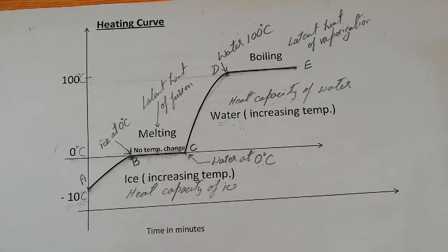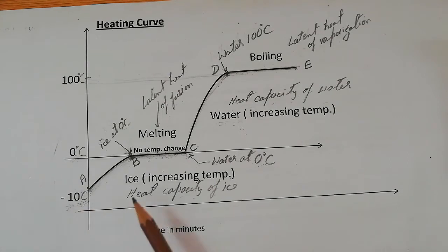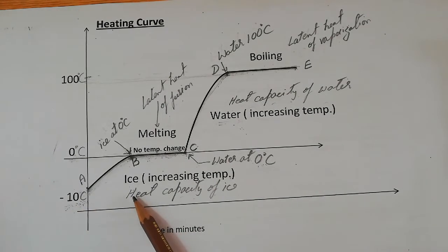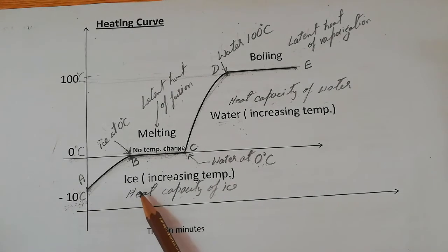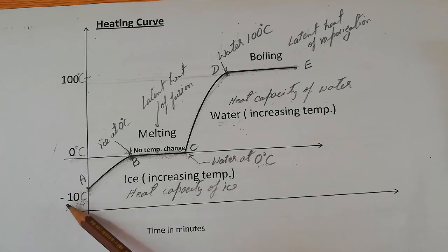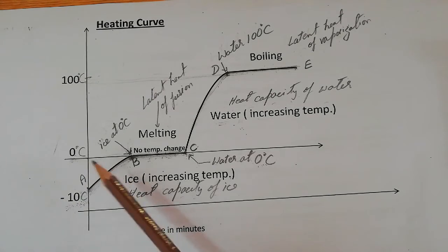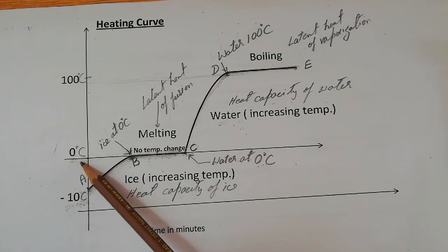Bismillahirrahmanirrahim. This is a heating curve, and I am taking the example of ice which is taken at minus 10 degrees Celsius. The ice is gaining heat, and after gaining heat, the temperature of ice will increase from minus 10 degrees Celsius to zero degrees Celsius. As you know, zero degrees Celsius is the temperature of melting ice.